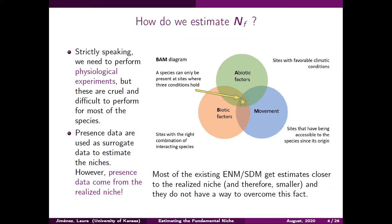However, most of these approaches get estimates closer to the realized niche, because the presence data come from this smaller subset in environmental space and the algorithms do not take into account this limitation. They don't have the mechanisms to overcome this limitation and therefore don't get estimates closer to the fundamental niche.